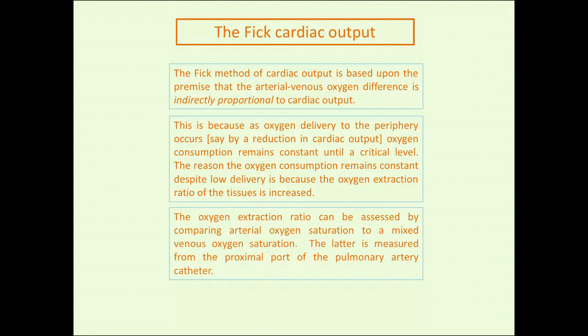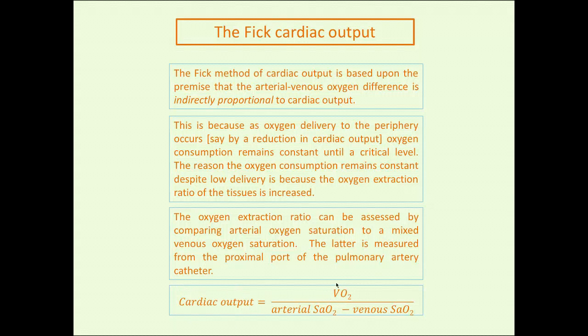You can assay this via the oxygen extraction ratio by obtaining a mixed venous oxygen saturation from the distal port of the pulmonary artery catheter. If it's very low, you can infer that the extraction ratio has increased due to a lowering of cardiac output. To actually calculate cardiac output via the Fick method, you need a direct measure of oxygen consumption—VO2. It's often assumed to be 125, but that's a generic number that can vary considerably with critically ill patients of different ages, sexes, and underlying disease states.